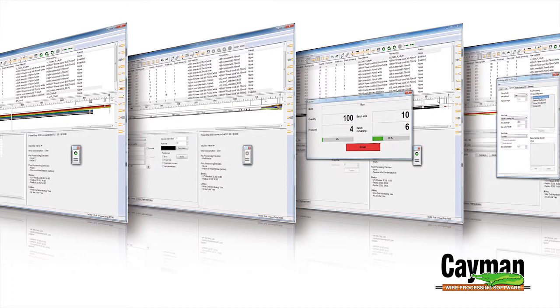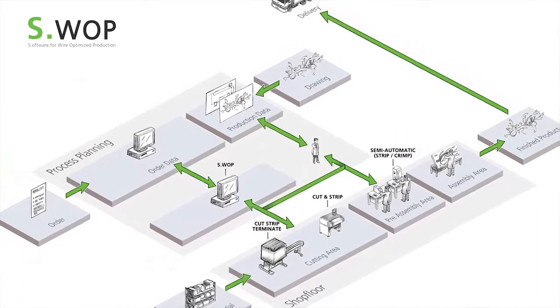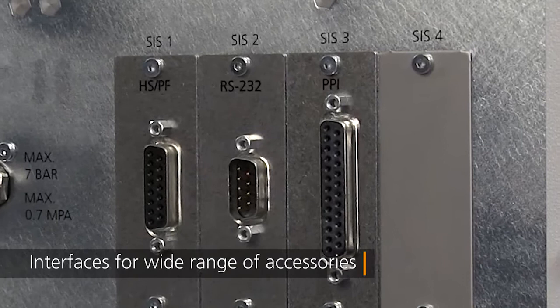With USB and Ethernet connections included as standard features, Schleuniger's compatible Cayman and Swap software for network integration, together with the EcoStrip 9380, raise the benchmark for entry-level cut and strip.